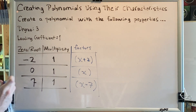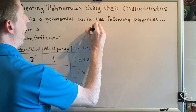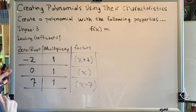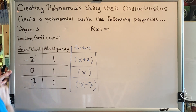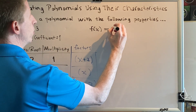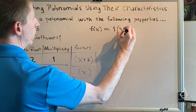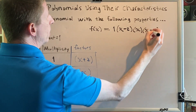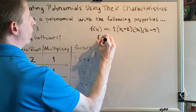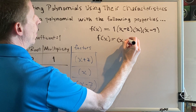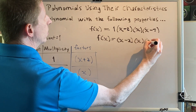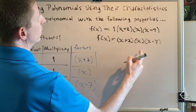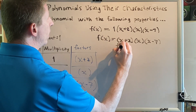Now that we have our factors, we're ready to create our polynomial. We'll call it f of x. The multiplicity tells us how many of each factor we need — in this case, just one of each. The leading coefficient goes first: 1. Then one of each factor. Anything times 1 is itself, so our answer in factored form is f of x equals the binomial x plus 2, times x, times the binomial x minus 7.